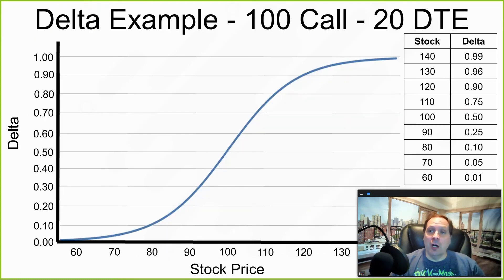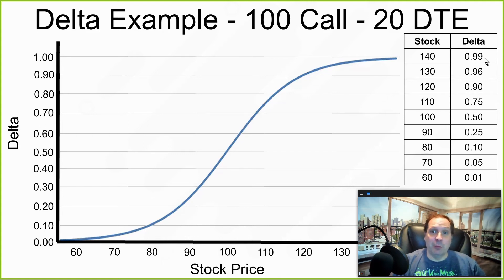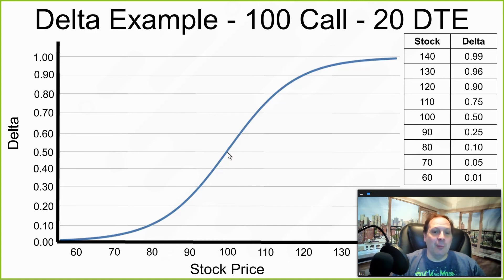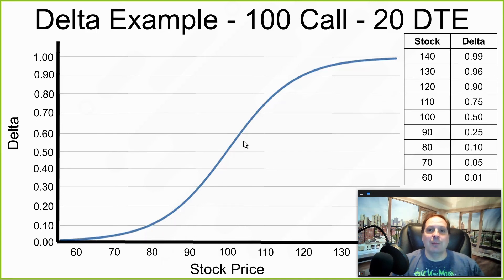Let's go back to our $100 call option. With the $140 stock price — $40 deep in the money — we had a delta of 0.99, which means a 99% probability of being in the money at expiration. With a $60 stock price — $40 out of the money — we had a delta of 0.01, meaning a 1% chance of being in the money at expiration. And at the $100 stock price, we're at the money with a 50% probability of being in the money, matching our 0.50 delta. So you can use delta as a predictor of the probability of being in the money at expiration.